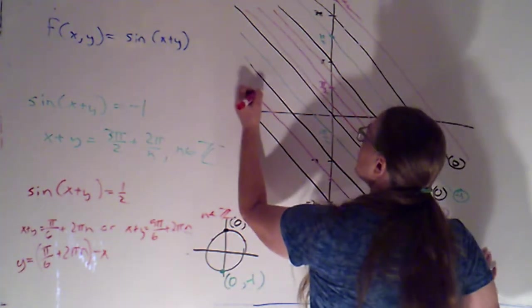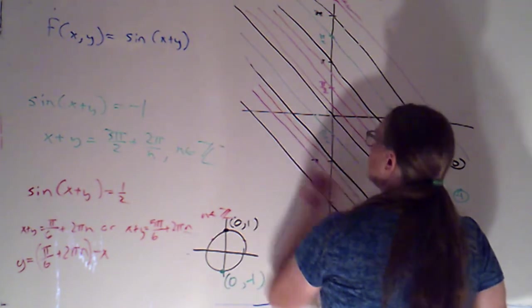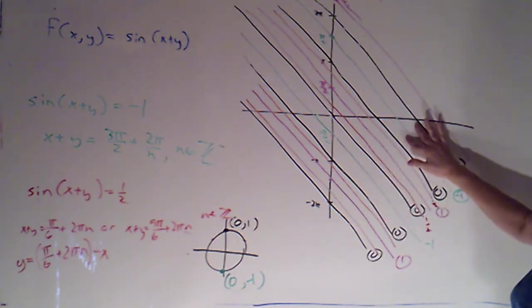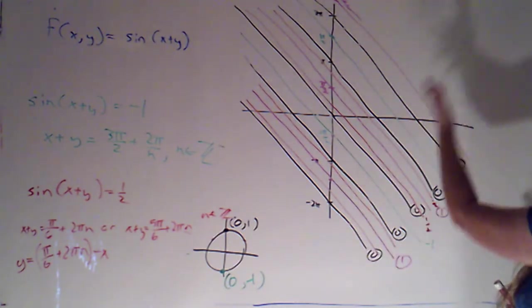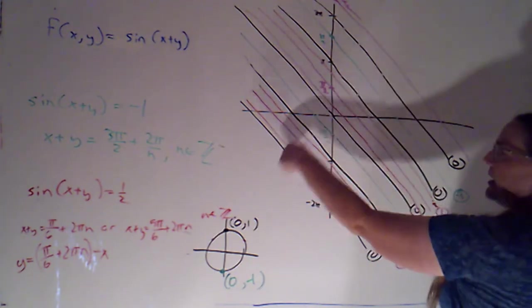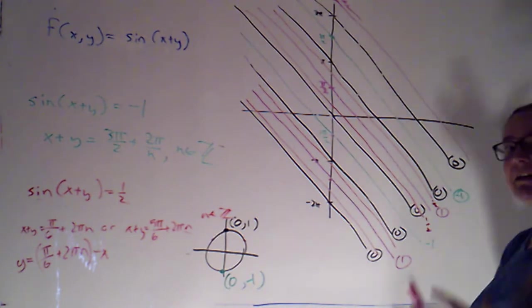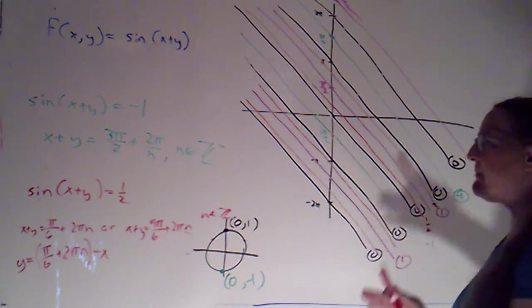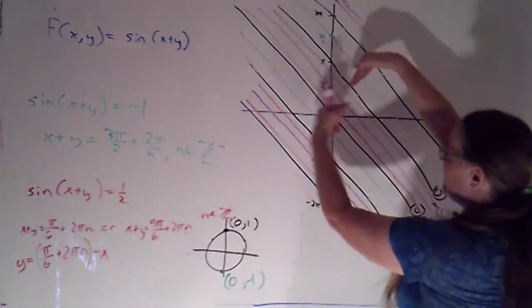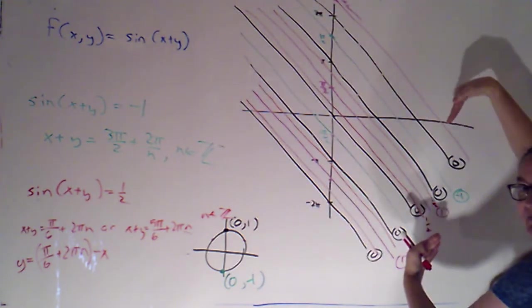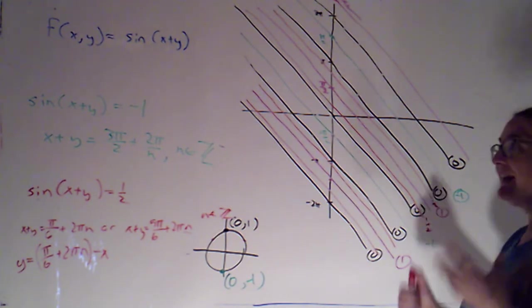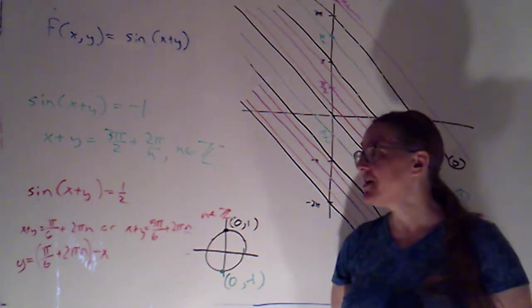So we'd have level curves for k = 1/2 on either side of where k = 1 appears, and level curves for k = −1/2 filling in the negative region. Following these level curves lets us see the behavior of sine. Essentially, if I travel along a line of slope negative 1, I'm basically tracing a sine curve. What we're getting is an extrusion of a sine curve — not parallel to the x-axis or y-axis, but parallel to these lines of slope negative 1, translating the sine curve all along. In the next video, we're going to start talking about functions of three variables, where instead of level curves we'll have what we call level surfaces.